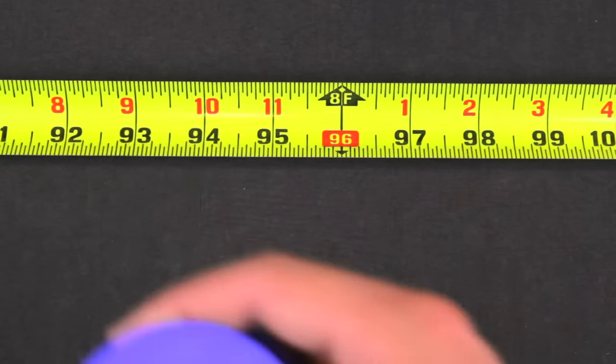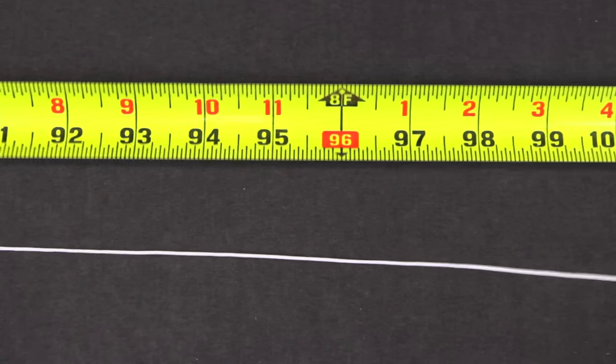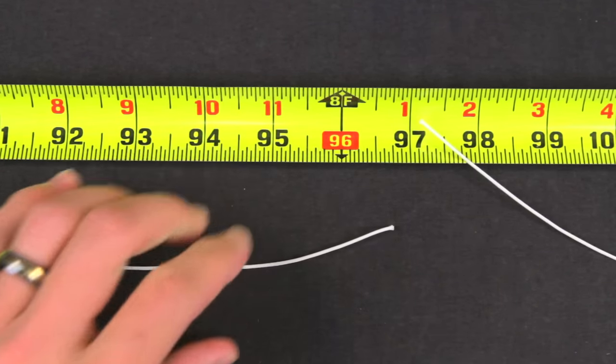Pull the string off of the roll like this to prevent twisting. Cut all of the strings you'll need for this repair now. We recommend replacing all of the lift strings at the same time to ensure proper function of the shade.